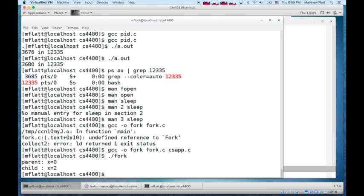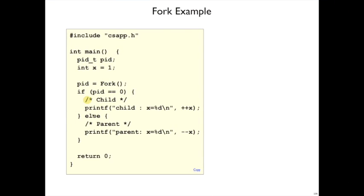When we run this program, we see parent X equals zero, child X equals two. So that's demonstrating that both branches of this if happen, the child branch and the parent branch, and they had different copies of X as well.